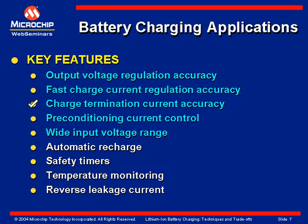Charge termination current accuracy is another very important feature, as it determines how much capacity you're getting into the battery on every charge cycle. Pre-conditioning current control is a key feature that minimizes heat and pressure buildup inside the battery, increasing reliability and performance. A wide input voltage range allows the charger to be used with a variety of input sources and lowers your overall system cost.